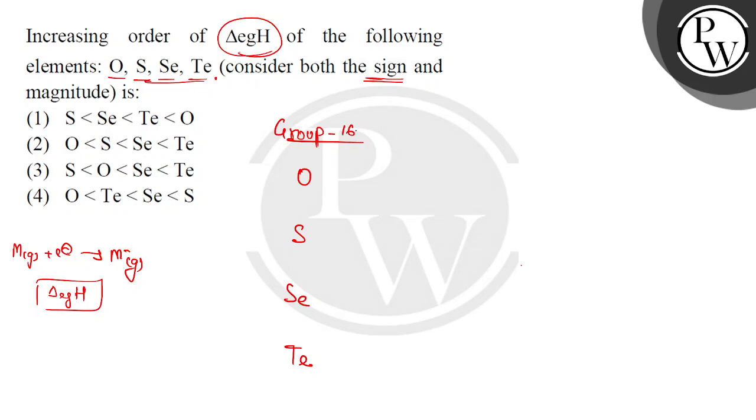Now, group 16 elements are the first electron gain enthalpy. When we add the first electron, and when we simply write it, we talk about the first electron gain enthalpy, which is negative. Electron gain enthalpy is inversely proportional to the radius. If the radius is less, then the electron gain enthalpy will be more.